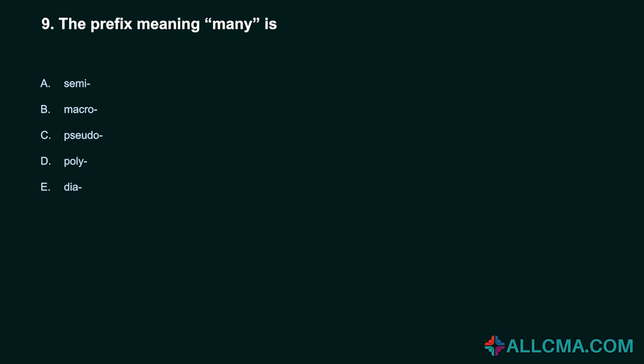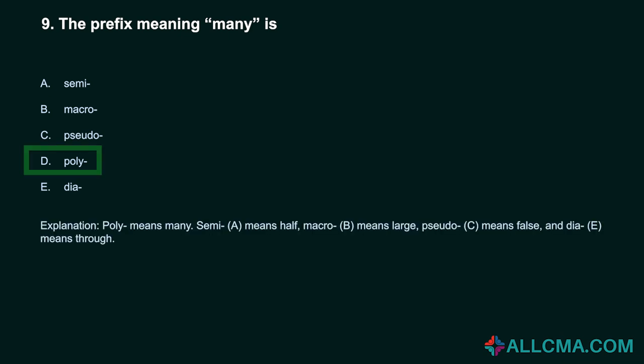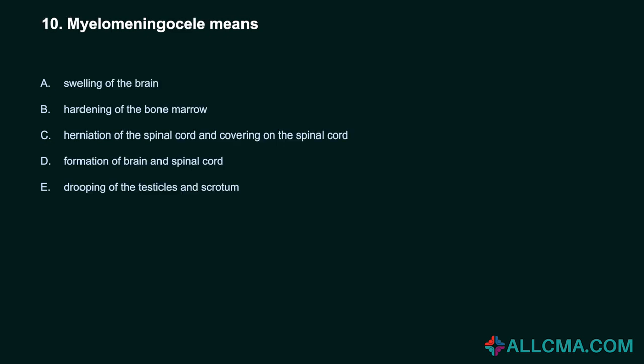Question 9: The prefix meaning many is: a) semi, b) macro, c) pseudo, d) poly, e) dia. Correct answer: D, poly. Poly means many. Semi means half, macro means large, pseudo means false, and dia means through.